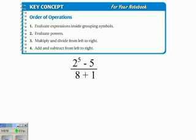Number two says evaluate powers. Well I have one power, 2 to the 5th power, so I'll rewrite it down here. The fraction, 2 to the 5th power is 32, so I write 32 minus 5. And then the fraction bar. Now down here, 8 plus 1 is separate, but I can do that now because I've already done what's on the top.